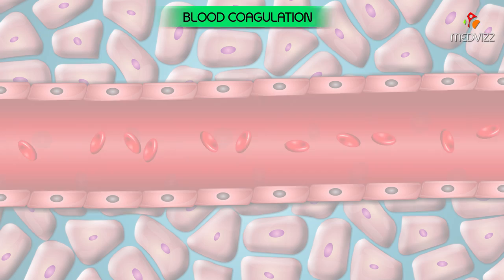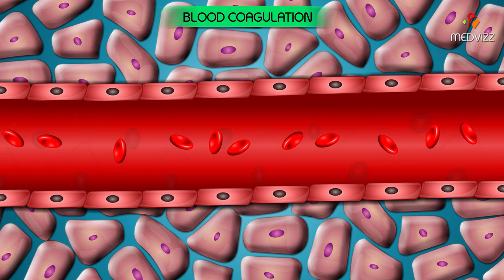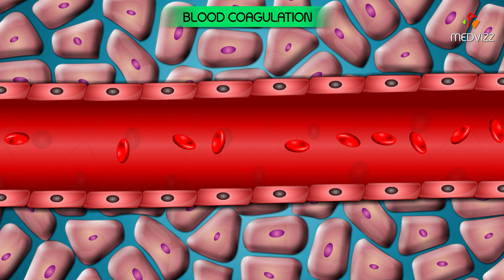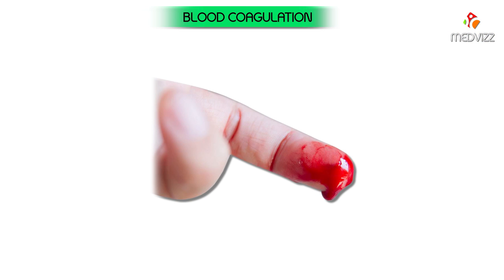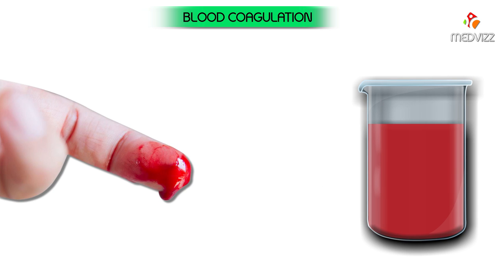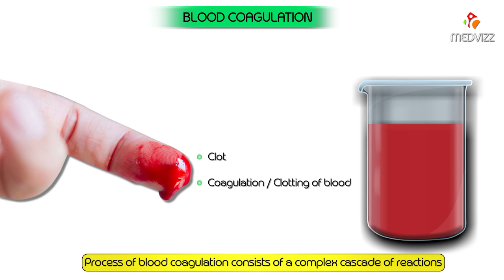Blood coagulation: blood remains in fluid condition within the blood vessels throughout life, but when blood is shed from the blood vessels or collected in a container, it loses its fluidity within a few minutes and gets converted into a jelly-like mass which is called a clot. This phenomenon is called coagulation or clotting of blood.